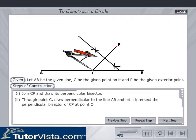Through the point C, draw a perpendicular line to AB and let it intersect the perpendicular bisector of the line CP at point O.